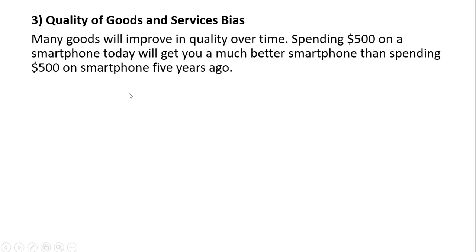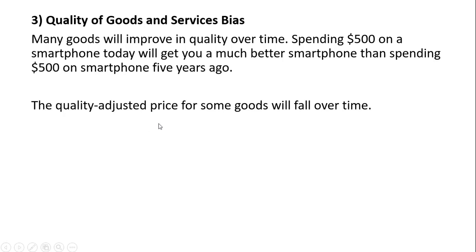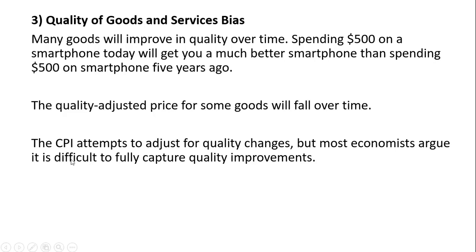Quality of goods and services bias: many goods will improve in quality over time. Spending $500 on a smartphone today will get you a much better smartphone than spending $500 on a smartphone five years ago. So the quality-adjusted price for some goods will fall over time. The CPI attempts to adjust for quality changes, but most economists argue that it is difficult to fully capture quality improvements.